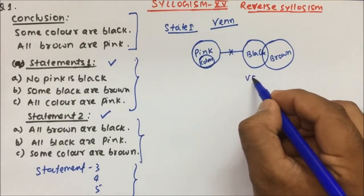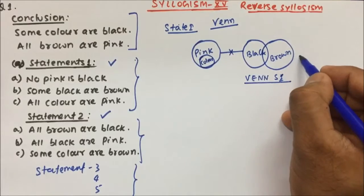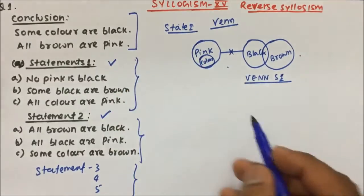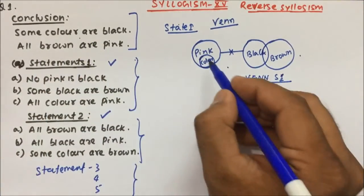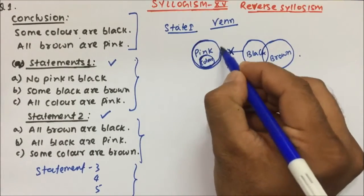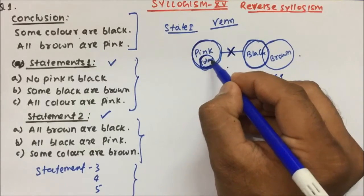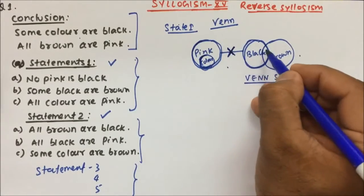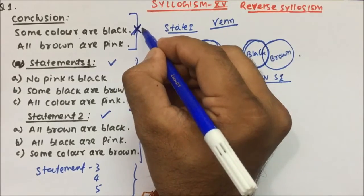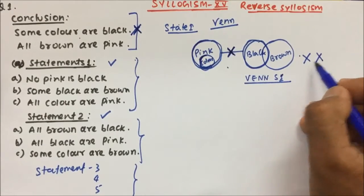Now let's see from statement 1 whether both conclusions will be true or not. Conclusion 1 is: some color are black. You see color and black — there is no relation. The complete pink and black have no relation, so obviously the color inside pink will also not have any relation with black. So conclusion 1 becomes false. When conclusion 1 is false, there is no need to check conclusion 2. So from statement 1 we cannot get the answer.